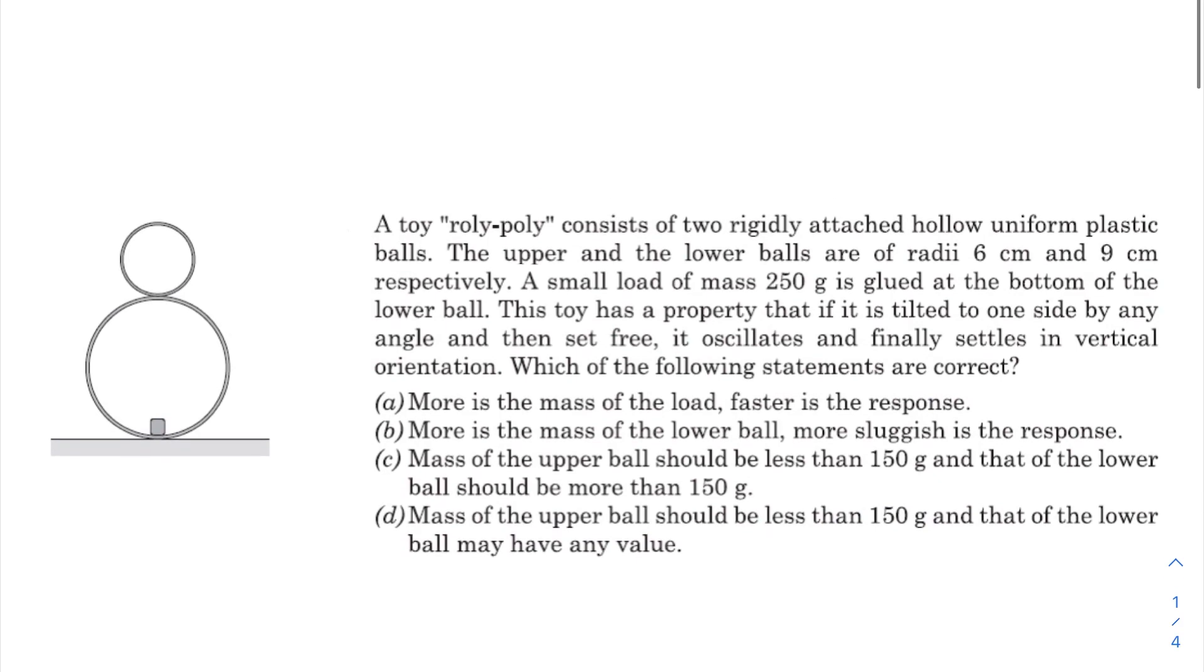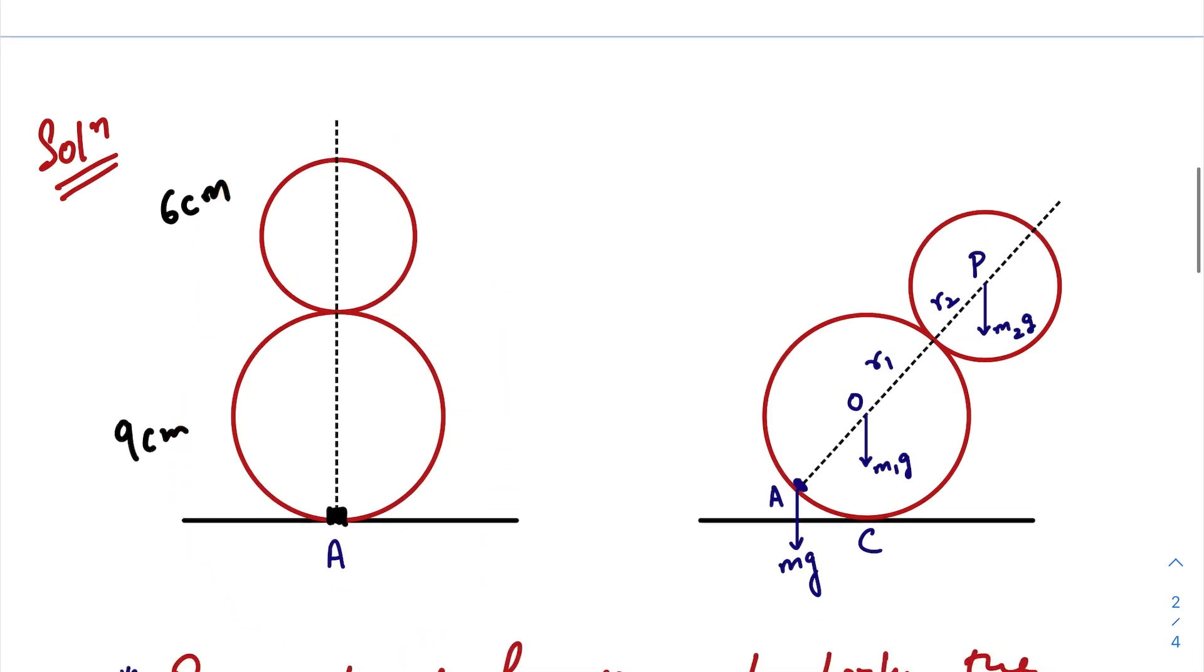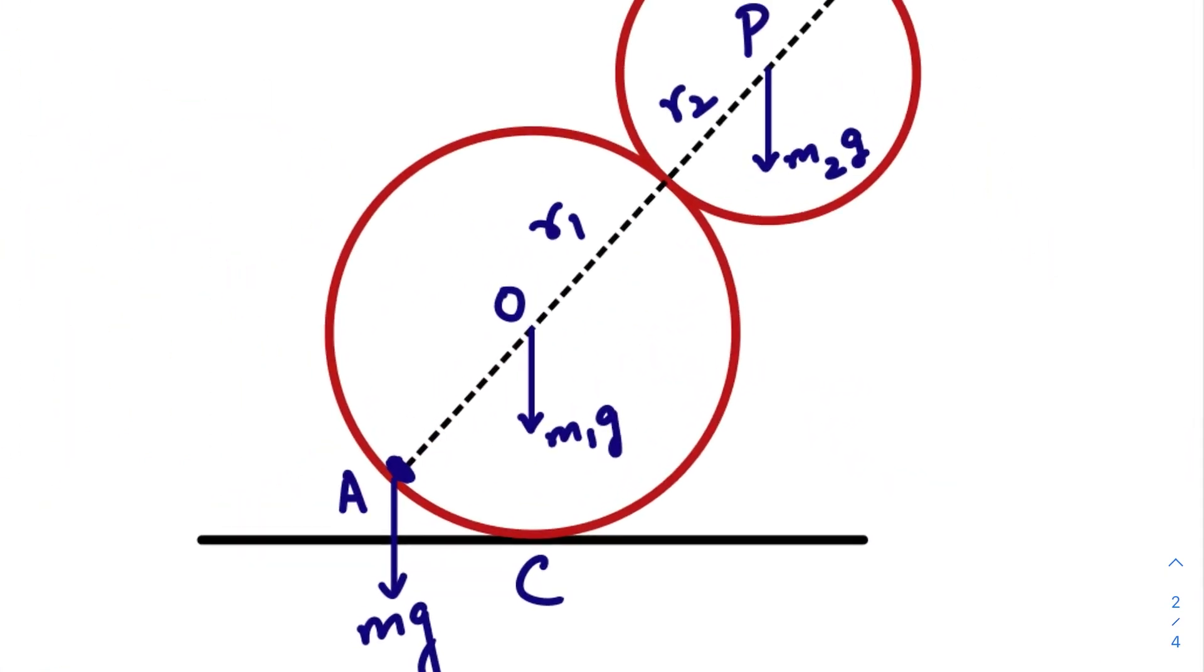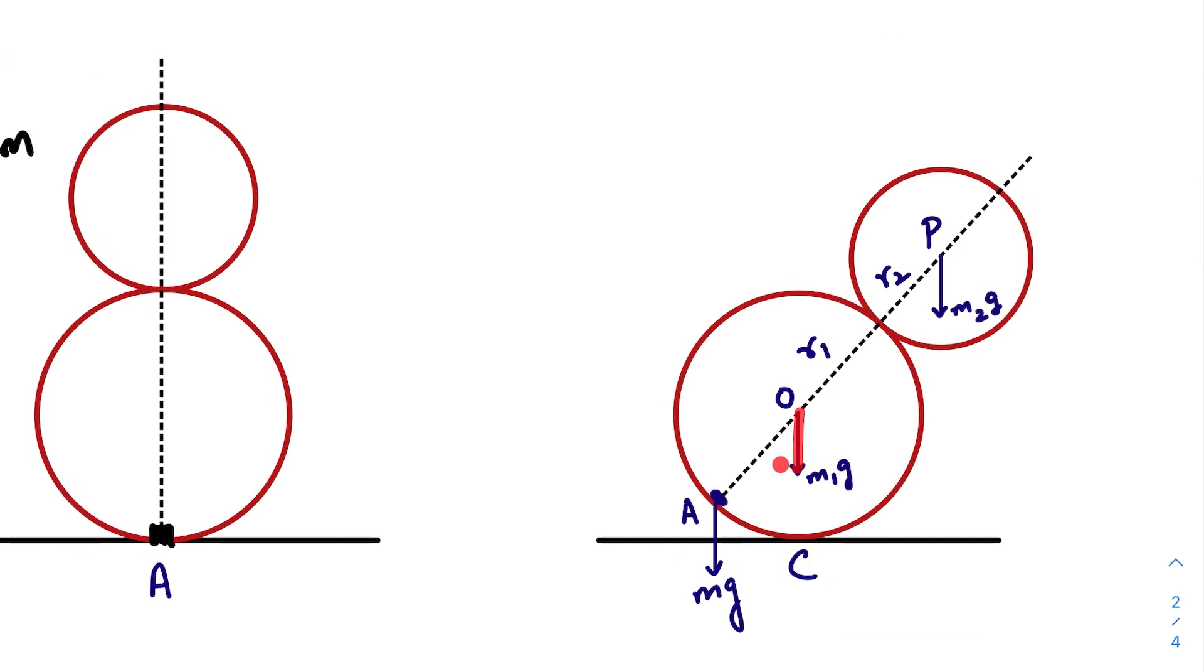Okay, so first here we have a condition for the masses of these two balls. So let us go through that very quickly. So this is our structure initially, and when this structure is tilted by some angle theta, these are the torques or the forces that will act on the whole frame.